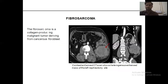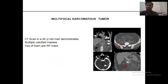Fibrosarcoma: fibrosarcoma is a collagen-producing malignant tumor derived from cancerous fibroblasts. CT scan of a 40-year-old man demonstrates multiple calcified masses, two of which are retroperitoneal masses, in this multifocal sarcomatous tumor.